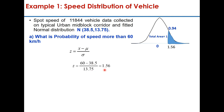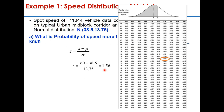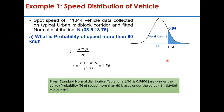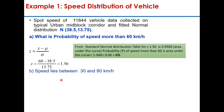Corresponding to z = 1.56, you find the area under the curve from the table. You go to row 1.5 and column 0.06 and get 0.9406. So the probability of speed being less than 60 km/h is 0.9406, and therefore the probability that the speed will be more than 60 km/h is 1 − 0.9406 = 0.0594, or about 6%.